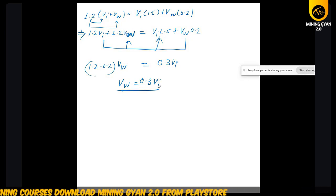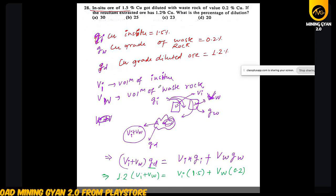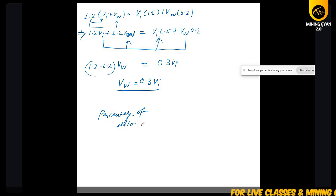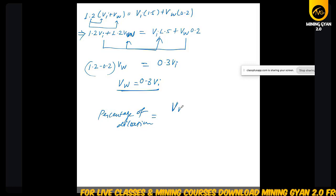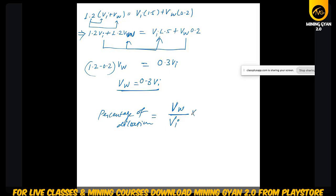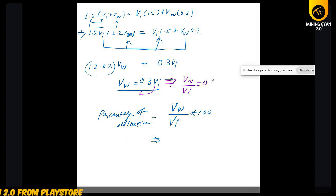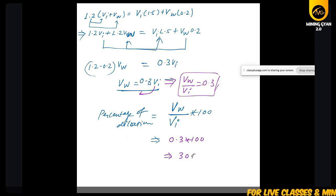Percentage of dilution = (V_w / V_i) × 100 = 0.3 × 100 = 30% dilution. Dilution is defined as waste rock divided by in-situ ore, multiplied by 100.